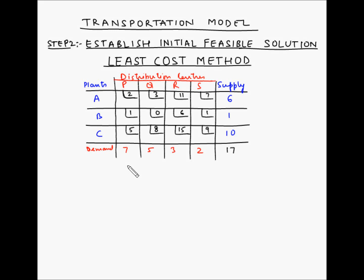In the previous video we saw the northwest corner rule for establishing an initial feasible solution for the transportation model. In this video we look at another alternative method which is the least cost method for establishing an initial feasible solution for the transportation model.